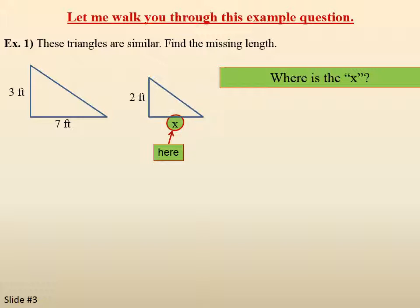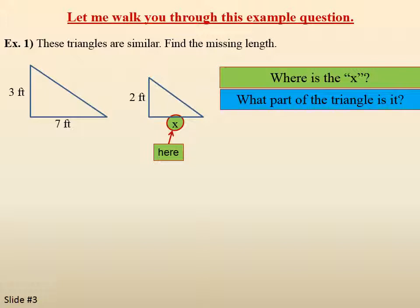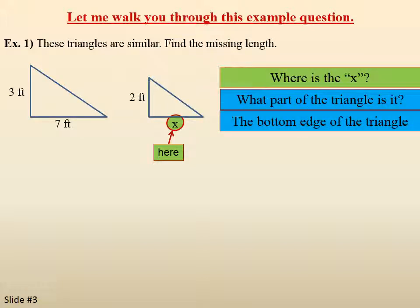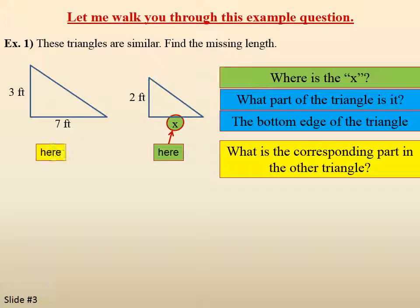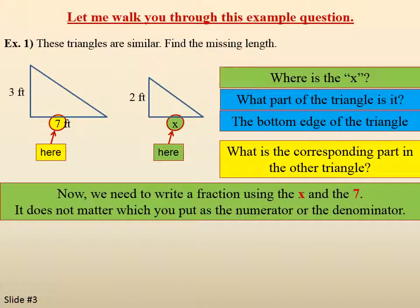The question you have to ask yourself is: where is the X? What part of the triangle is it? It's the bottom part. What is the corresponding part in the other triangle? It's the bottom part of the other triangle. So we're going to take the X and the seven and write a fraction. It doesn't matter which you put as the numerator or the denominator — you could write seven over X or X over seven.